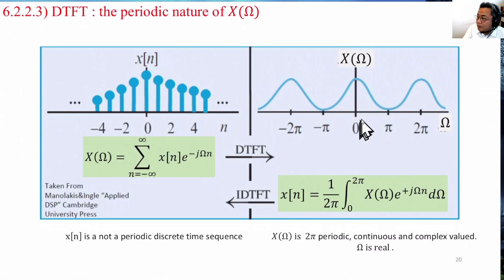What this means is that if we have calculated X(Ω) from 0 to 2π, it's going to repeat from 2π to 4π, and minus 2π to 0. Or if you have computed minus π to π, it's going to repeat from π to 3π, and so on. So this is the periodic nature of X(Ω).